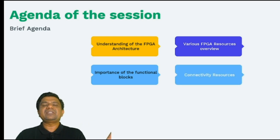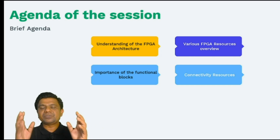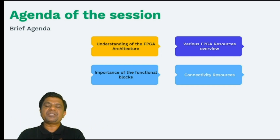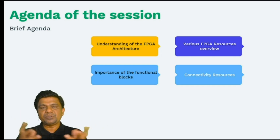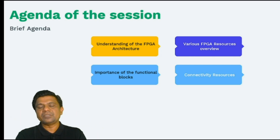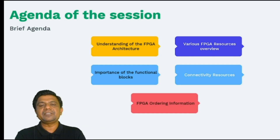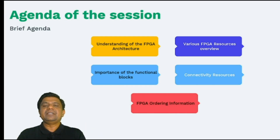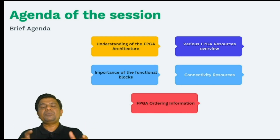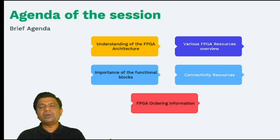We will cover the connectivity resources — that is IO resources, input-output resources, input-output blocks — their architecture, and FPGA ordering information, that is how we can order the FPGA.